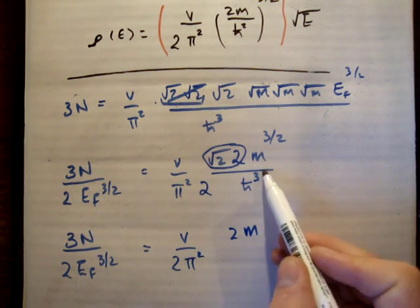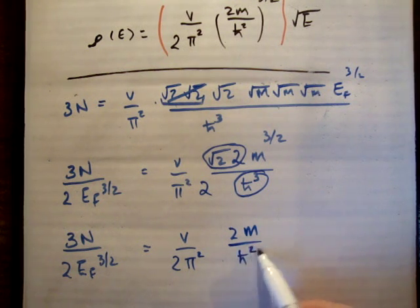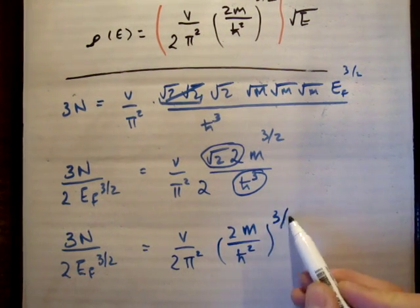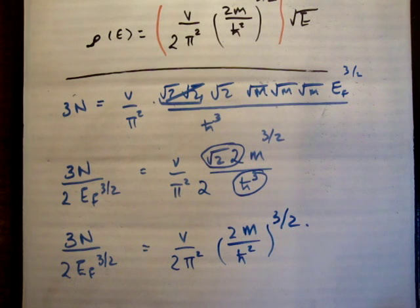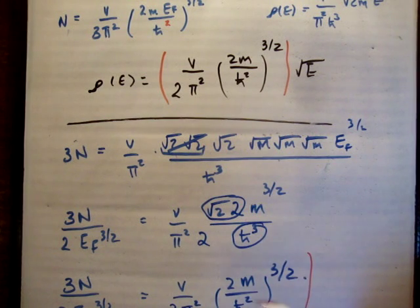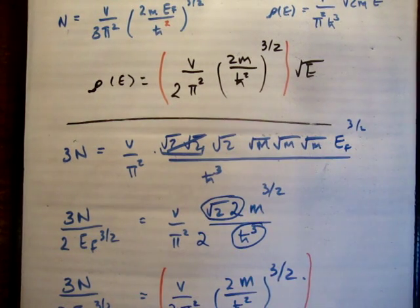And my h bar squared, I can do the same thing. I'm going to have h bar squared to the 3 over 2, like that. Now let's compare that to the formula I've written above. So this in brackets here is the exact same as what's written up there.